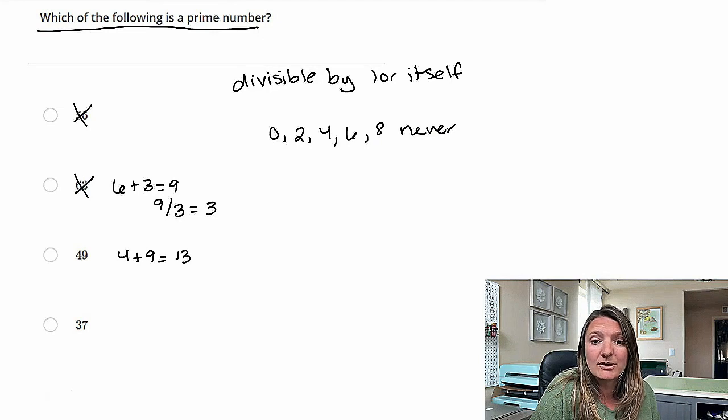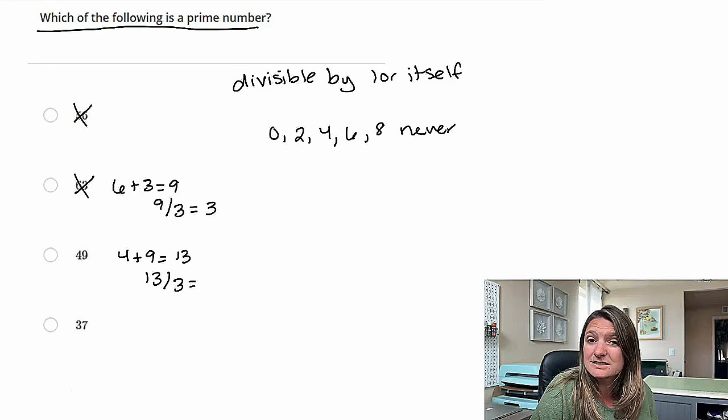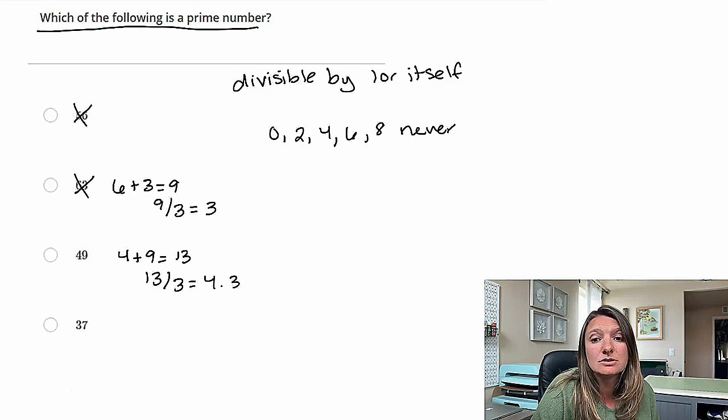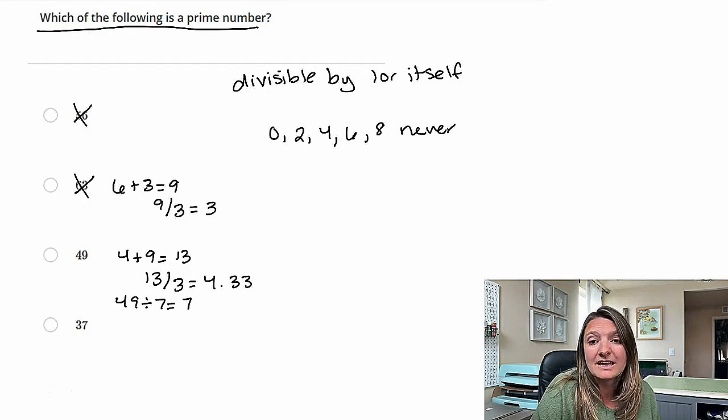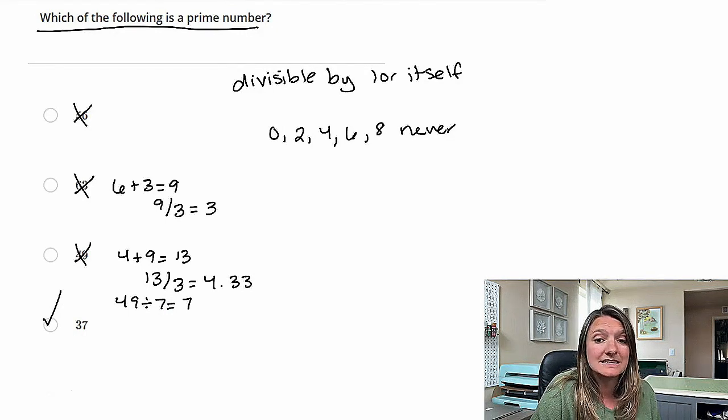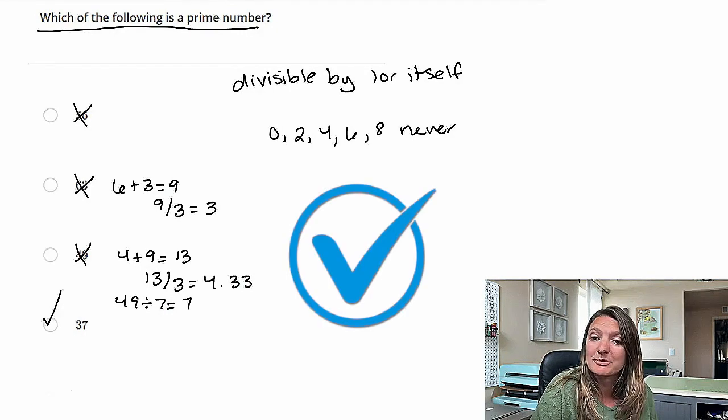So let's look at C. So four plus nine is 13. 13 divided by three isn't a whole number, but we do know that 49 divided by seven, if you know your multiples of seven, is also seven. So that is in fact not a prime number, which leaves us with D. 37 is a prime number.